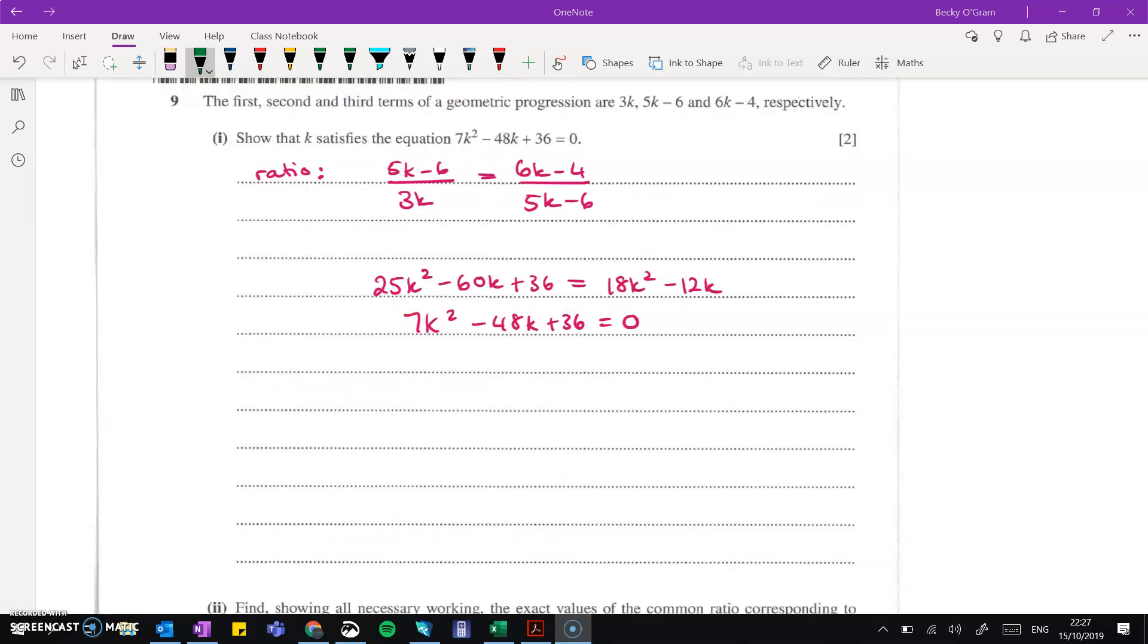Question 9 is about geometric progression. And again, I feel like this is a question that's put in a slightly odd way. There's a few questions in this paper that are a little bit different to the norm. So we've got the progression in terms of k's here. Now, in other papers, you might have seen them as x's or just simply as numbers.